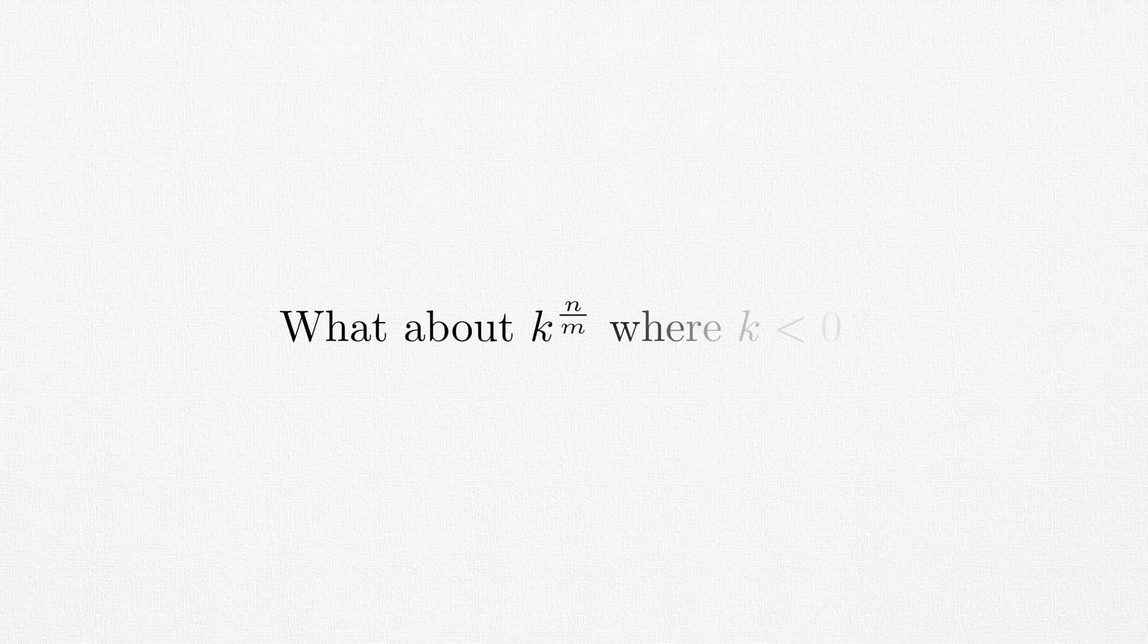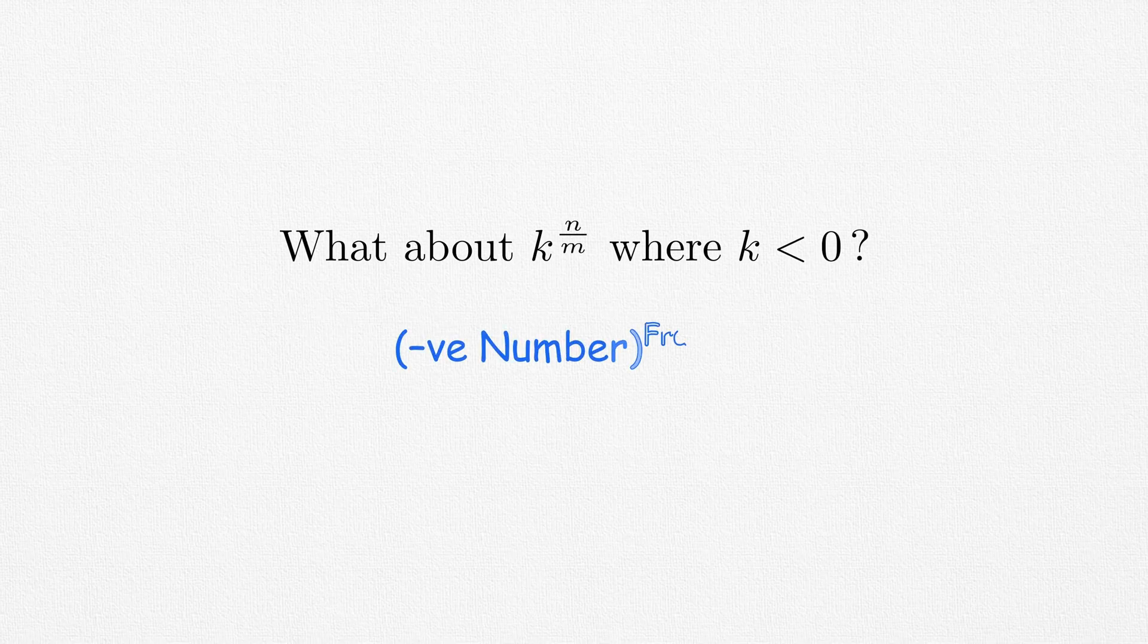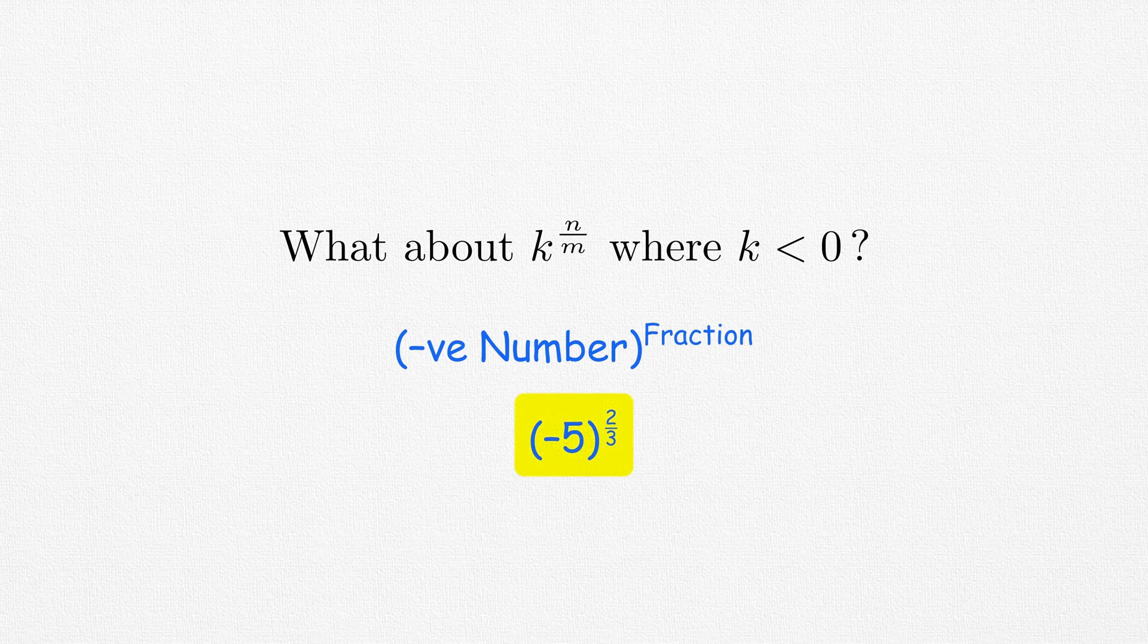Now the question still is what's the correct way to obtain the wrong answers. The answer actually lies in this really good but extremely ambiguous question: What happens when we raise negative numbers to fractional powers? We'll be taking the example of this instance where minus 5 is raised to the power 2 by 3. There are three possible cases based on context.